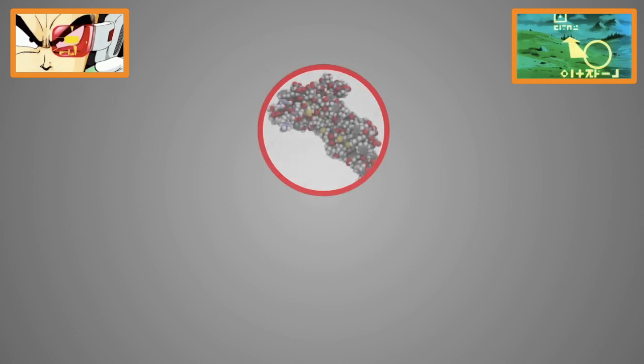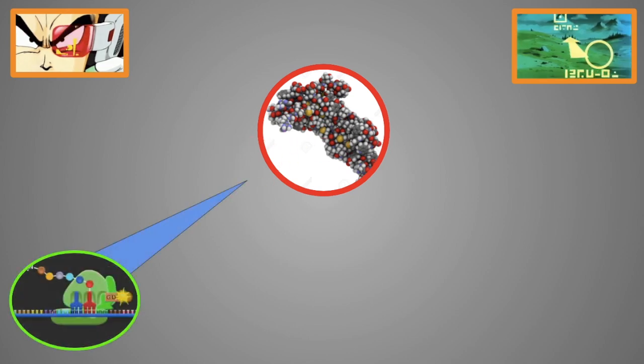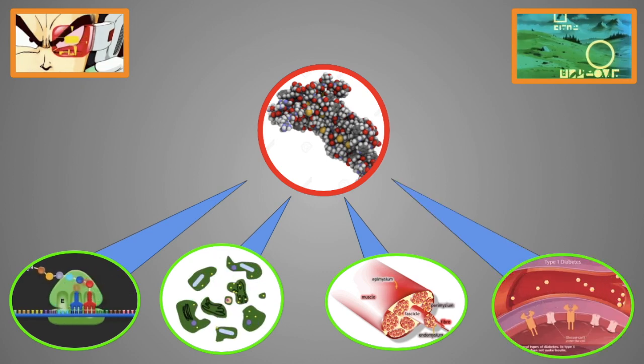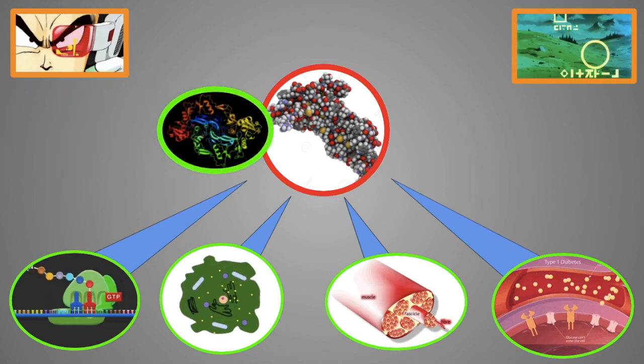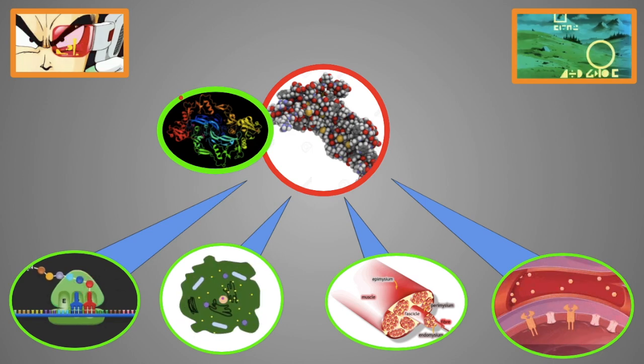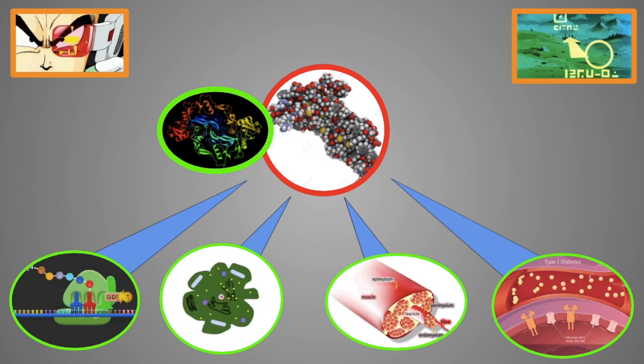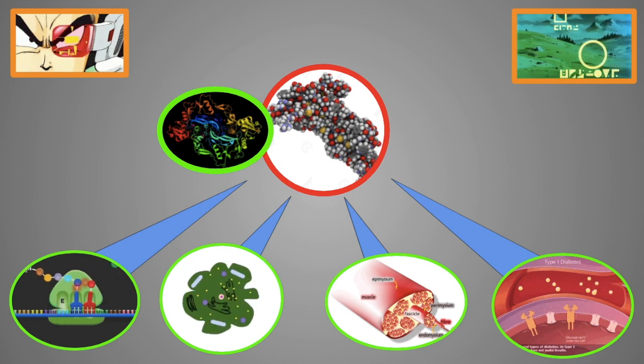For those who need a refresher on myostatin, you can skip this part of the video if you're already familiar with this. But for those who need a refresher, it's just a protein that your body produces, obviously from a gene, and it has four main functions in the body. The first one is it stops protein synthesis. It increases protein breakdown. It lowers satellite cell activation, and it makes you insulin resistant as fuck, which obviously makes you skinny fat and makes it harder for you to lose fat.